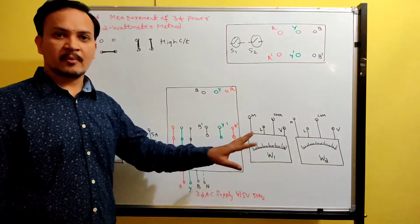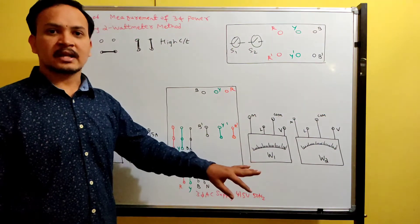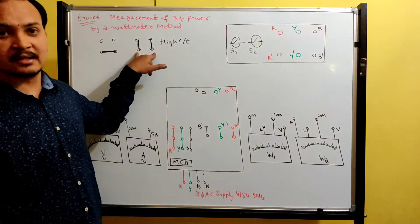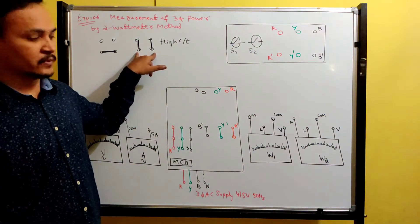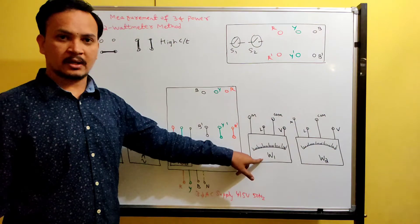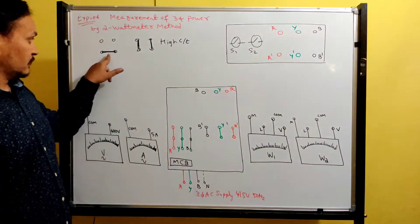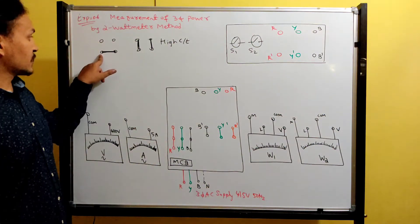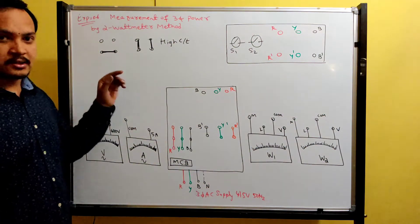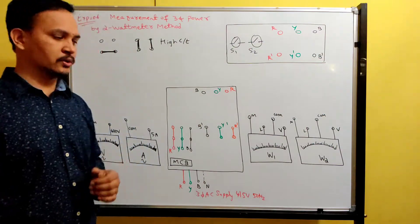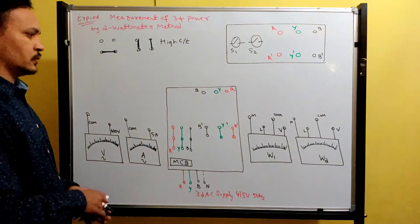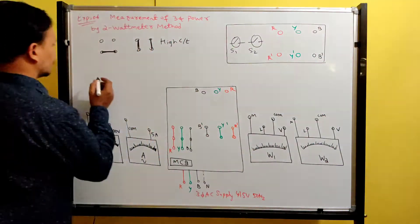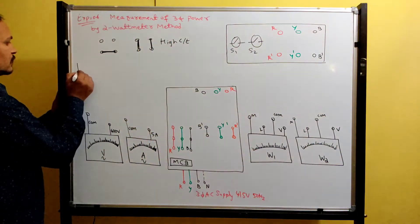If the wattmeter is rated 5 by 10 ampere: 5 is low current and 10 is high current. Similarly, another wattmeter may show 10 and 20 — meaning 10 is low current and 20 is high current. Check how the strips are connected before selecting the current range. Before doing the experiment, you have to find the wattmeter constant.